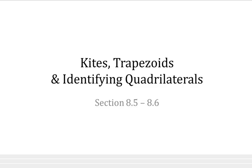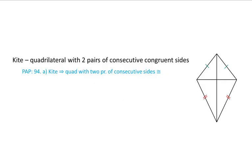Hello again. Let's continue our notes with kites, trapezoids, and then how to identify all the quadrilaterals we've talked about so far. A kite is a quadrilateral with two pairs of consecutive congruent sides.